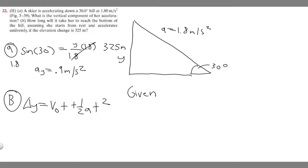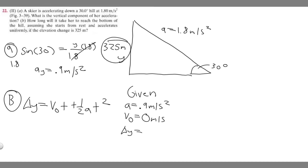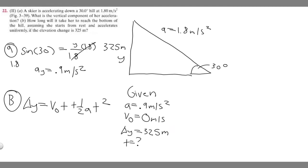Vertically, we know the acceleration is 0.9 meters per second squared. We also know that V-sub-0, the initial velocity, is zero because she starts from rest. And we know the elevation change — delta Y — is 325 meters. We're trying to find how long it will take, so T equals question mark. Looking at all the variables we have, we can plug everything into the formula and solve for T.